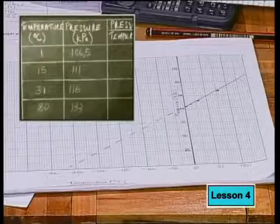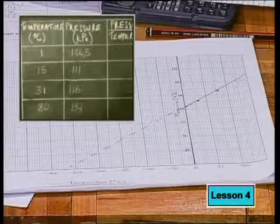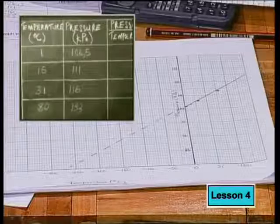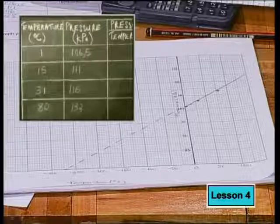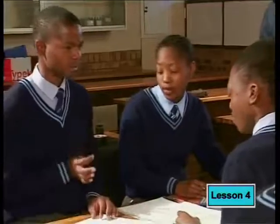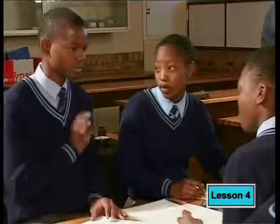Does your graph also look something like this? From the data collected during the experiment, the learners plotted a straight line graph. However, this graph does not pass through the origin. What does the shape of this graph tell us about the relationship between pressure and temperature? We got a straight line graph, and the straight line graph indicates that the volume of the gas is constant. I think it's not directly proportional — if it was directly proportional, pressure divided by temperature would give a constant factor, but the graph must cut through the origin to give direct proportion.